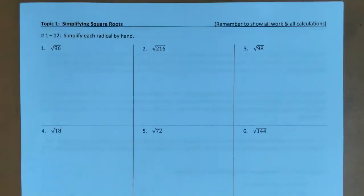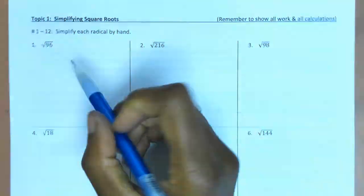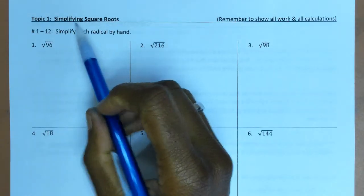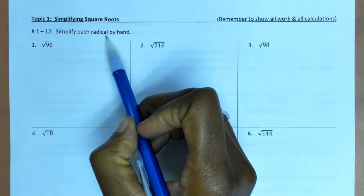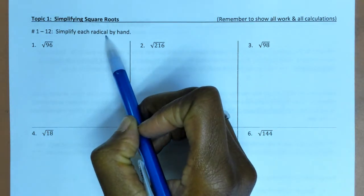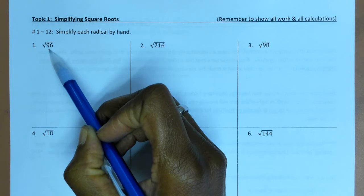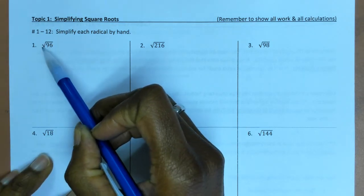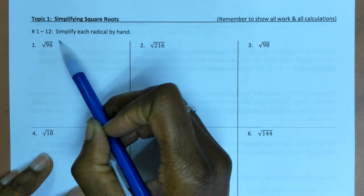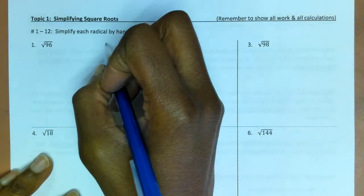The first topic is simplifying square roots. A couple notes: when simplifying each radical by hand, we want to break it down into a simplified version where we're taking out all of the perfect squares, because perfect squares square-rooted give us a whole number. Let me go through what the perfect squares are.